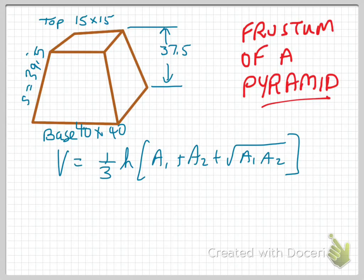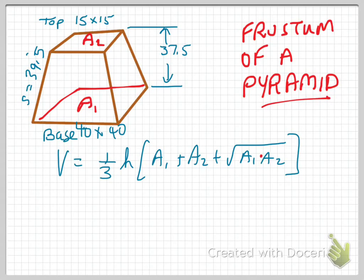A1, of course, is the area of the bottom of the pyramid, so we'll call that A1. And A2 is the area of the top. The square root of A1 times A2 would be added to that, and it would be one-third times the vertical height. In this case, the vertical height of the frustum of a pyramid is given as 37.5.